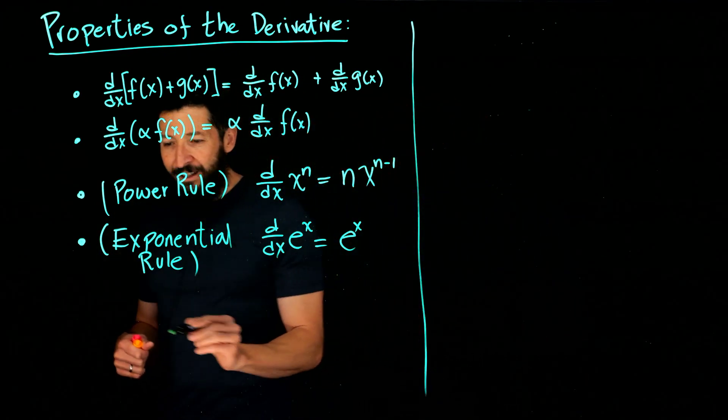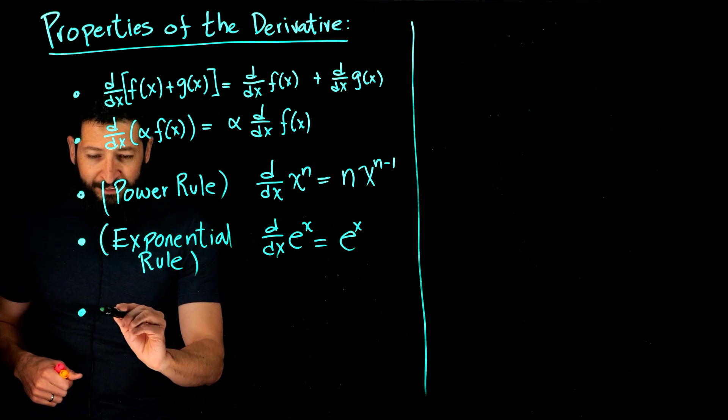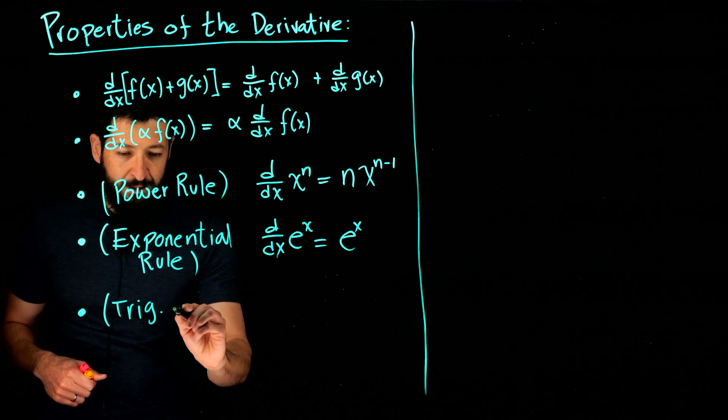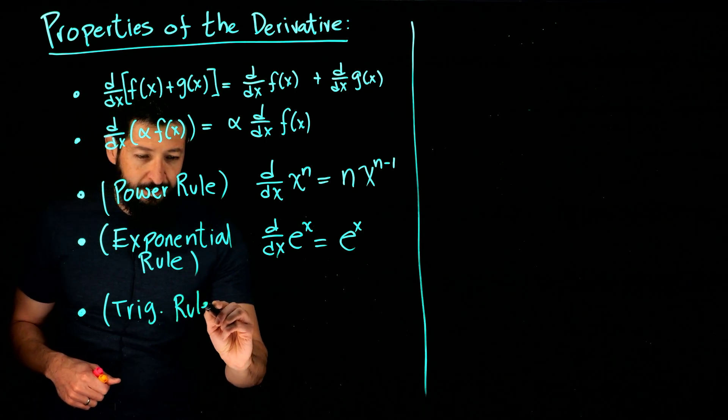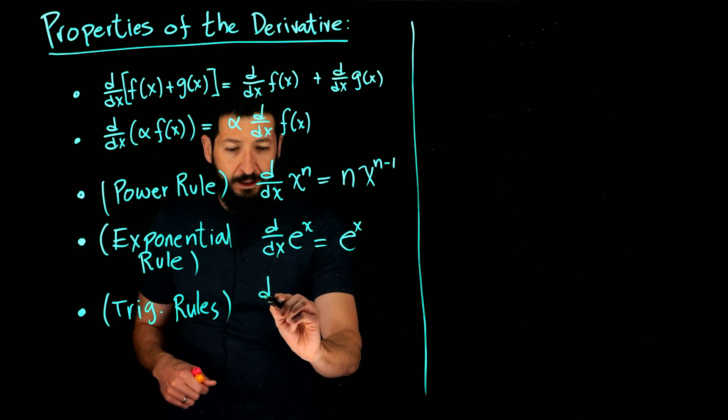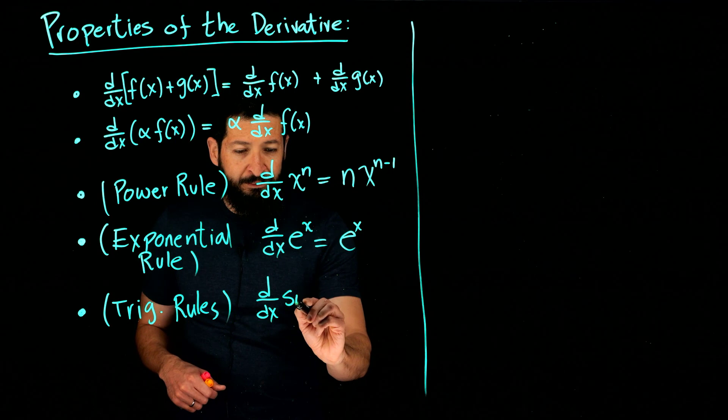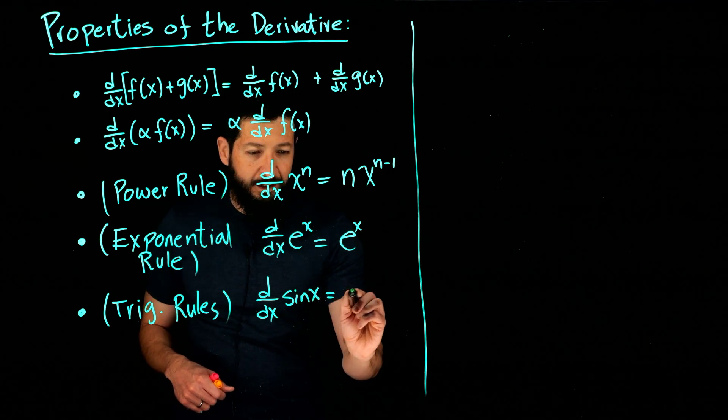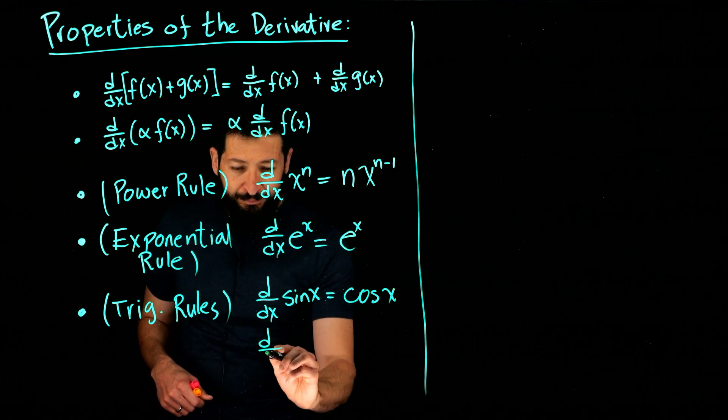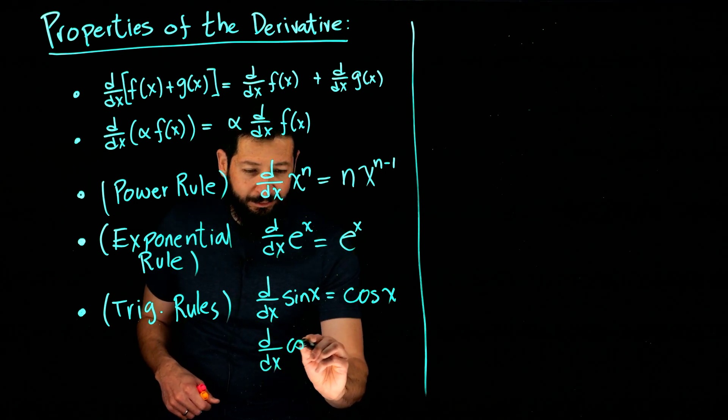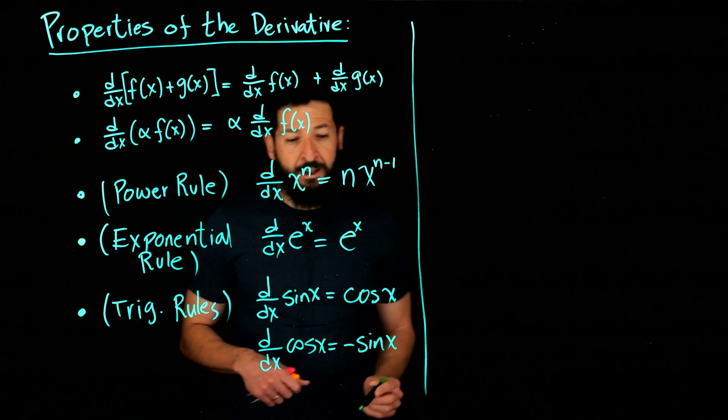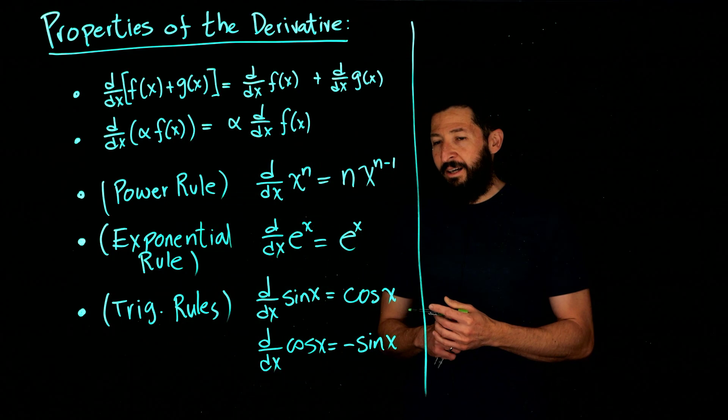Now we're going to do the derivative of the sine and the cosine, so trigonometric rules. The derivative of sine is going to be the cosine of x, and the derivative of the cosine of x is going to be the negative sine of x. All right, so those are our derivatives right there.